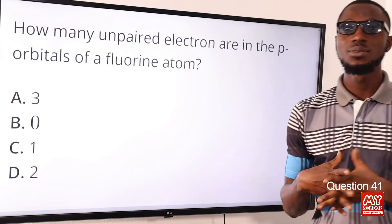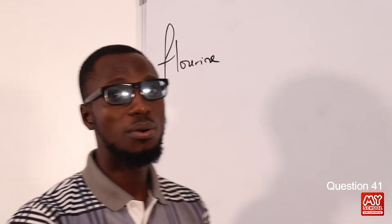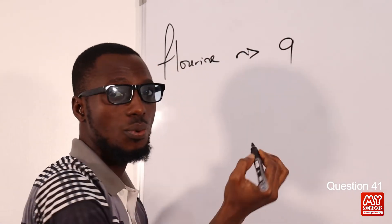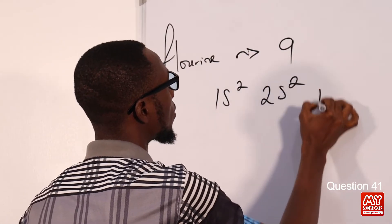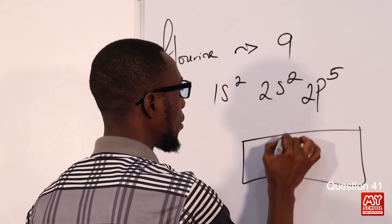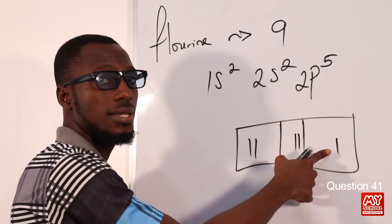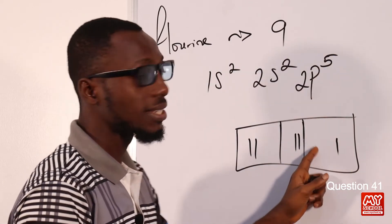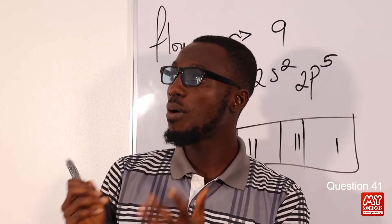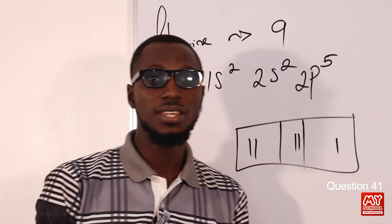Question 41: How many unpaired electrons are in the p-orbitals of a fluorine atom? Fluorine has atomic number 9 — hydrogen, helium, lithium, beryllium, boron, carbon, nitrogen, oxygen, fluorine. The electron configuration is 2, 2, 5. For the p-orbitals with 5 electrons, filling them: we have two paired pairs and one unpaired electron. So there is just one unpaired electron in the p-orbitals. The answer is in option C, so option C is the correct option.